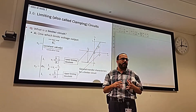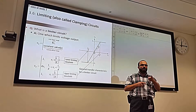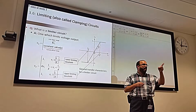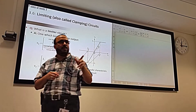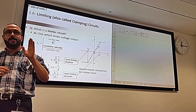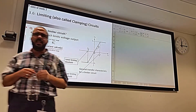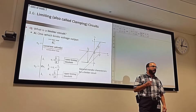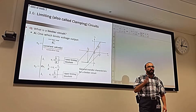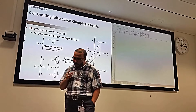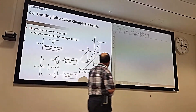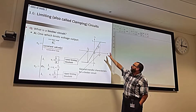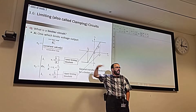What makes a rectifier a rectifier? Current direction — it allows current in only one direction, not the other. That's the property we use in the diode to make a rectifier. The same property will be used in this application as well.